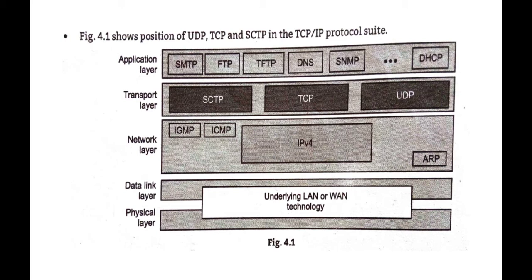The network layer uses five protocols: ICMP, IGMP, IPv4, ARP, and RARP. IPv4 is the main internetworking protocol, supported by the other four. ICMP is used for error control messages. IGMP is used when sending to a group of recipients. ARP and RARP are used for address resolution — mapping physical to logical addresses or logical to physical addresses.